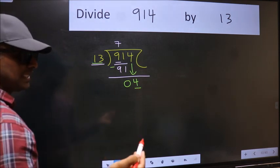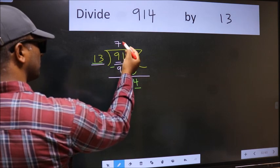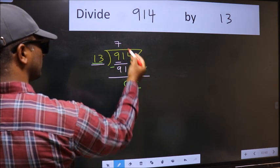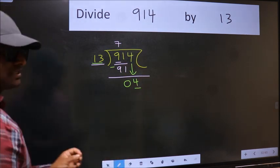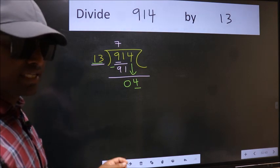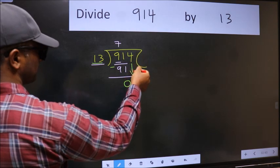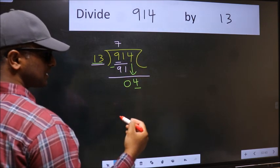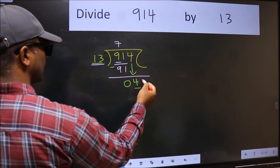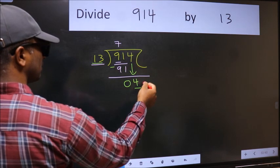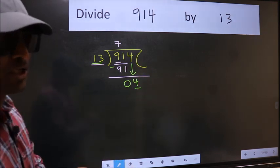So what many do is they directly put dot, take 0, which is wrong. Why is it wrong? Because just now you brought this number down and in the same step you want to put dot and take 0. Which is wrong.